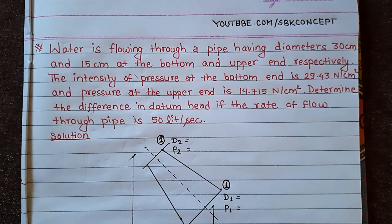and pressure at the upper end is 14.715 N/m². Determine the difference in datum head if the rate of flow through pipe is 50 liter per second.